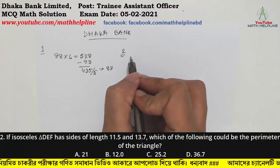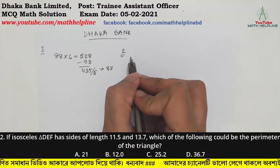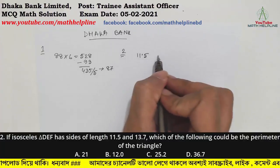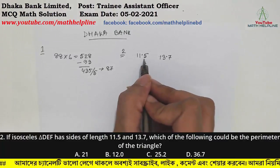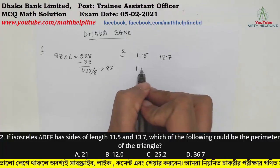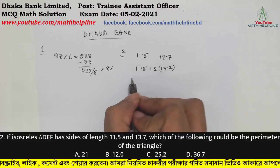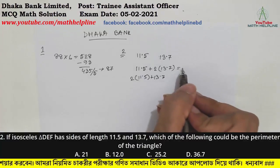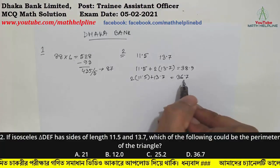Number 2: If an isosceles triangle DEF has sides of length 11.5 and 13.7, which of the following could be the perimeter of the triangle? The possible perimeter calculations give us 38.9 and 36.7. So 36.7 is the answer for the perimeter.